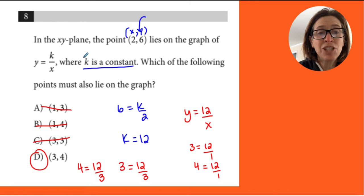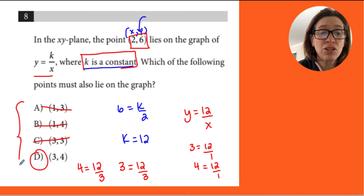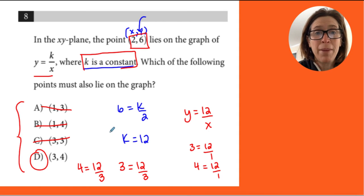All right. So let's pay attention again. k is a constant. You're given an equation with y, x, and k. And you're given a point. Great place to use substitution to find the constant. And then use your answers to look what makes something true.